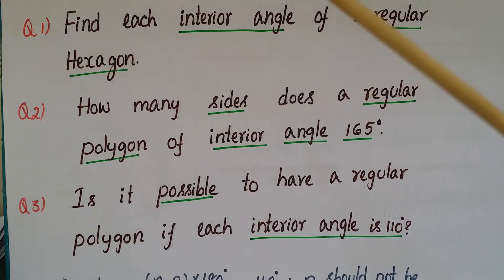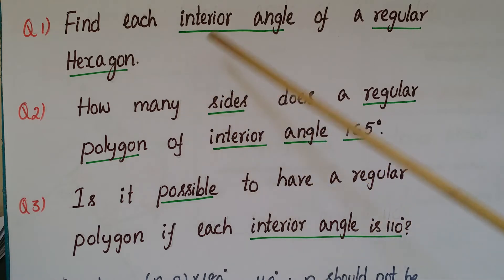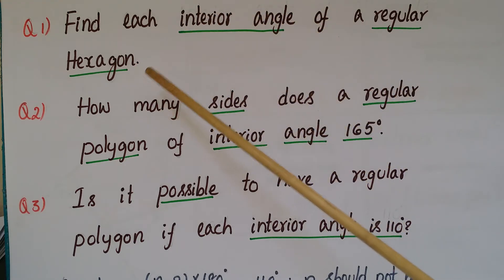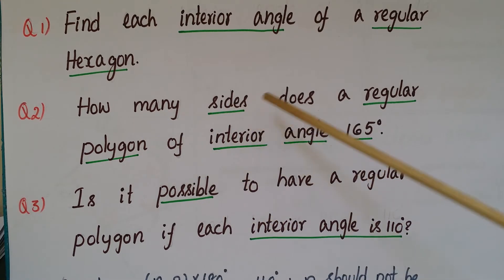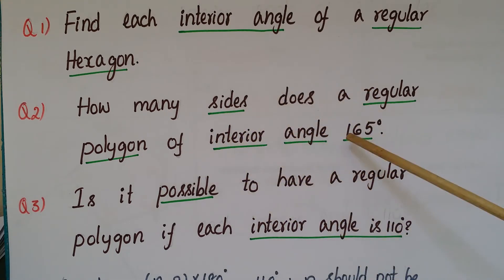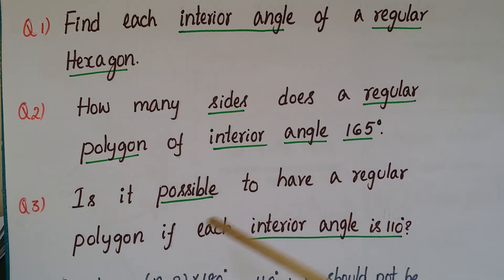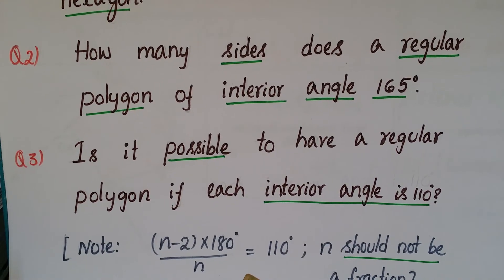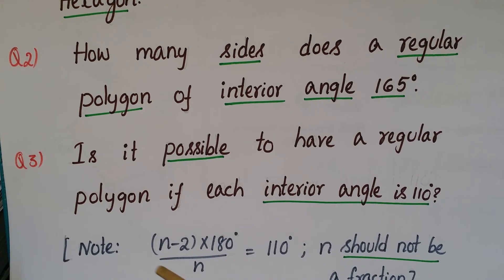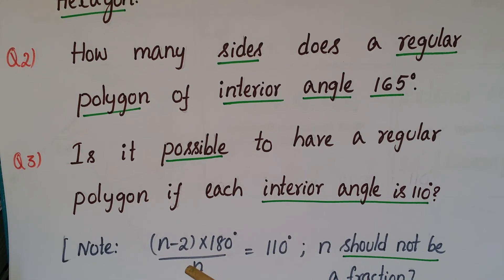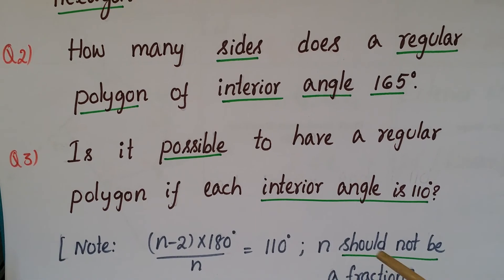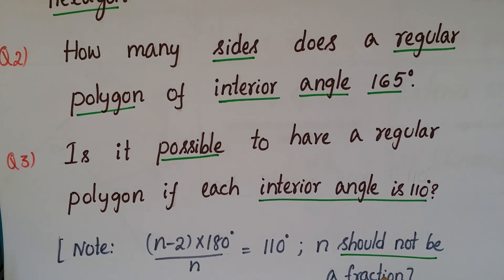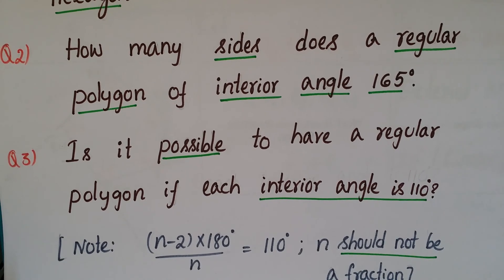Here are some practice questions. First: find each interior angle of a regular hexagon. Second: how many sides does a regular polygon have if each interior angle is 165 degrees? Third: is it possible to have a regular polygon where each interior angle is 110 degrees? Use the formula (n minus 2) into 180 divided by n equals the interior angle. Note that n must not be a fraction, since n is the number of sides.